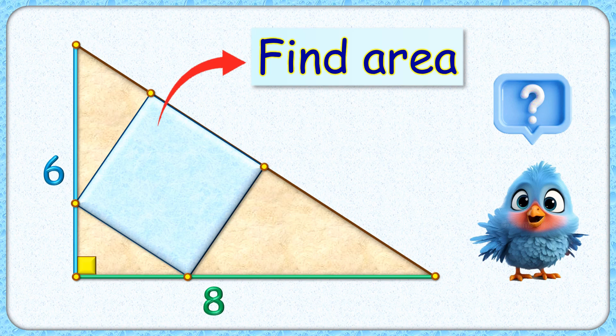Welcome everyone to this interesting question. We have a square inside a right angle triangle such that the side of the square is aligned with the hypotenuse of the triangle. The exciting part is with this given data we have to find the area of the square.